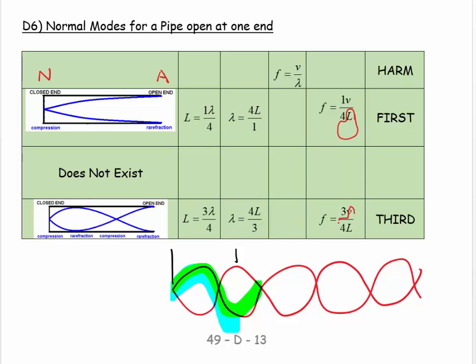And hopefully we can see again that this V over 4L is a constant in both cases. The ratio is 1 times that constant, 3 times that constant. Well, the ratio of the frequencies is what tells us the harmonic.